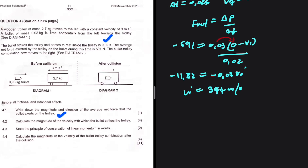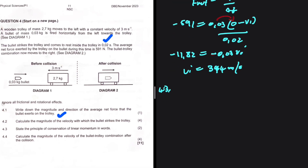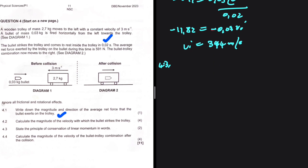The bullet is traveling just above the speed of sound in air — that is question 4.2. Question 4.3: state the principle of conservation of linear momentum in words. The total linear momentum in an isolated system remains constant or is conserved.